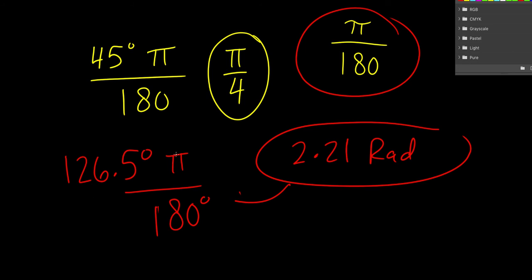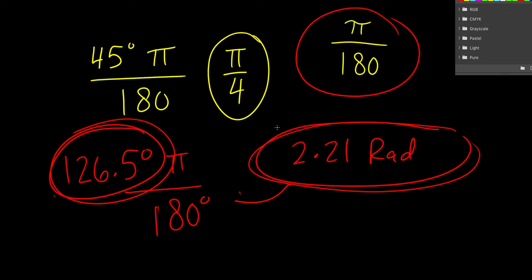So once again, this angle measured in degrees is the same thing as this angle measured in radians, just like 12 inches is 1 foot. Those numbers are different, but the units make them the same length.